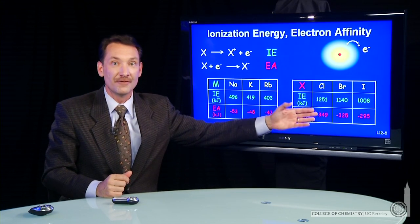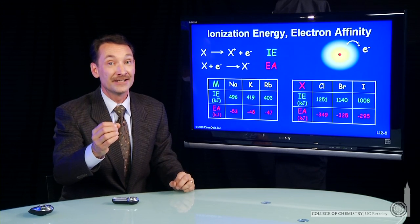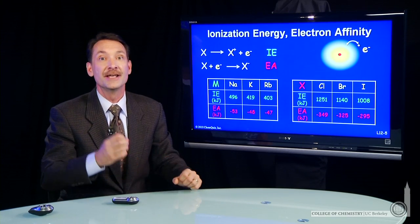Sodium and chlorine form an ionic bond due mainly to the fact that the coulombic interaction is so strong.